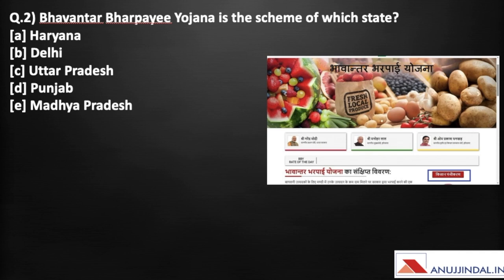For example, if the government sets the price for potatoes at Rs 85 per kg and a farmer gets only Rs 80 per kg in the market, the difference of Rs 5 will be given by the government. So Bhavantar is the difference between the actual market price and the government-set price. It is the state of Haryana which launched this scheme in 2018.